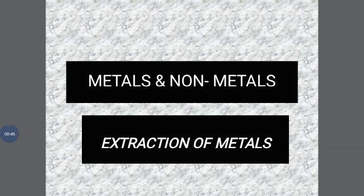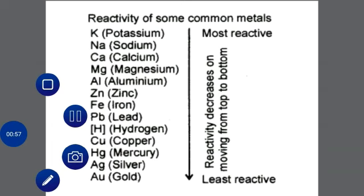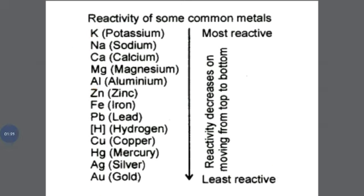For example, gold ore — we extract it for commercial purpose. Now you can see our table which indicates the reactivity of some metals, where reactivity decreases from top to bottom. We divide it into three groups: metals of high reactivity (potassium, sodium, calcium, magnesium), metals of medium reactivity (zinc, lead, iron), and metals of least reactivity (mercury, silver, gold).